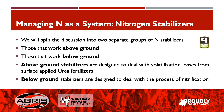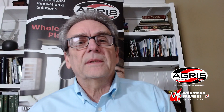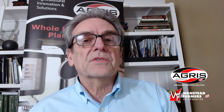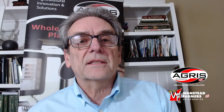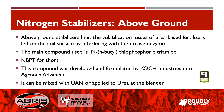When we talk about volatilization losses, invariably it's a urease enzyme that is attacking the urea molecule and driving off free ammonia. The main component used to stabilize this nitrogen is N-butyl thiophosphoric triamide, or NBPT for short.